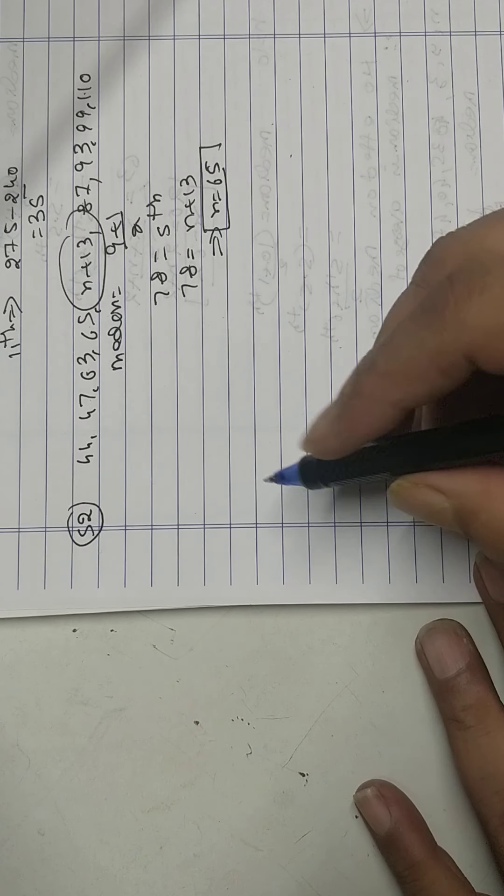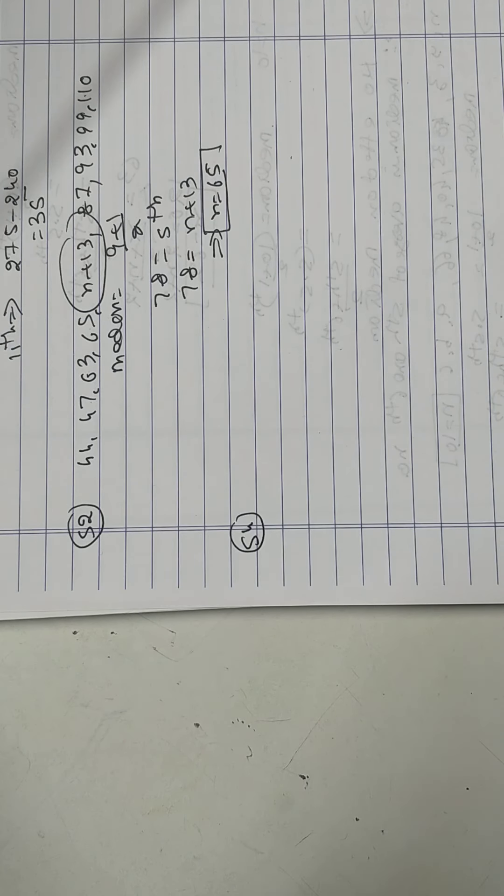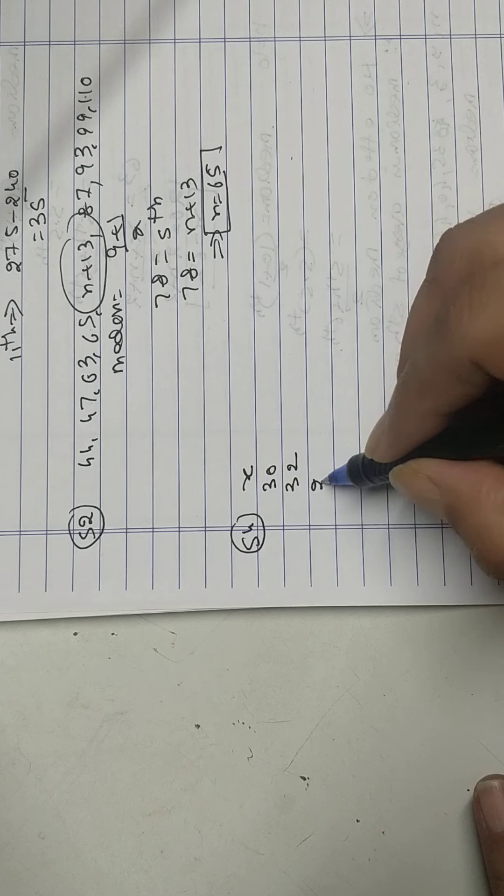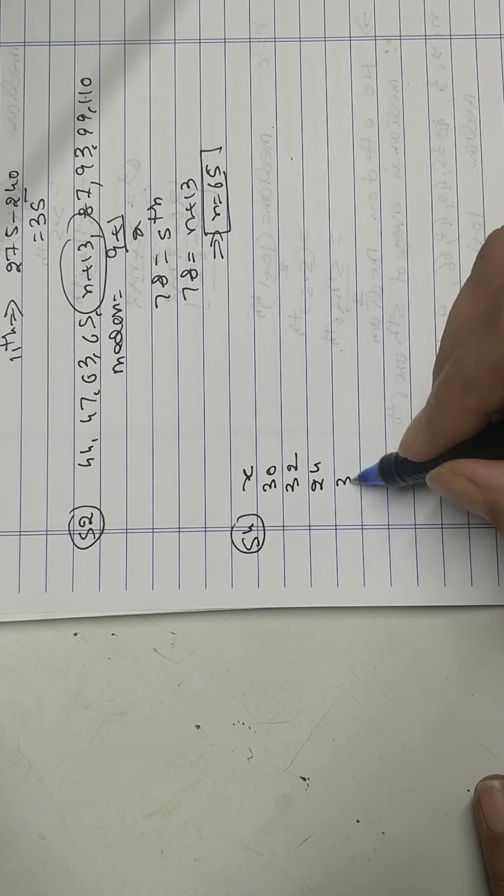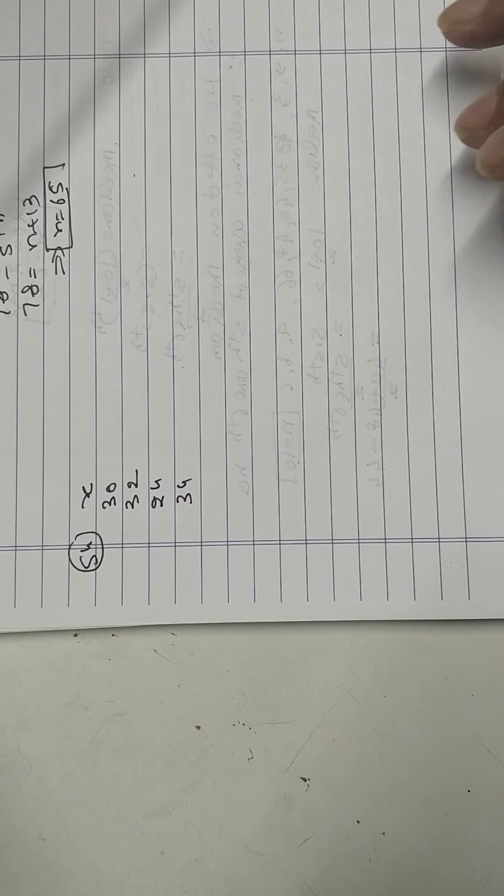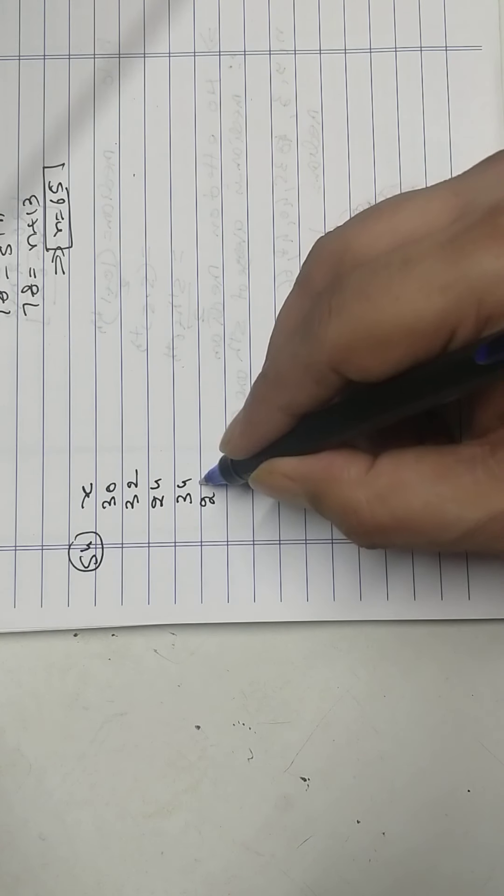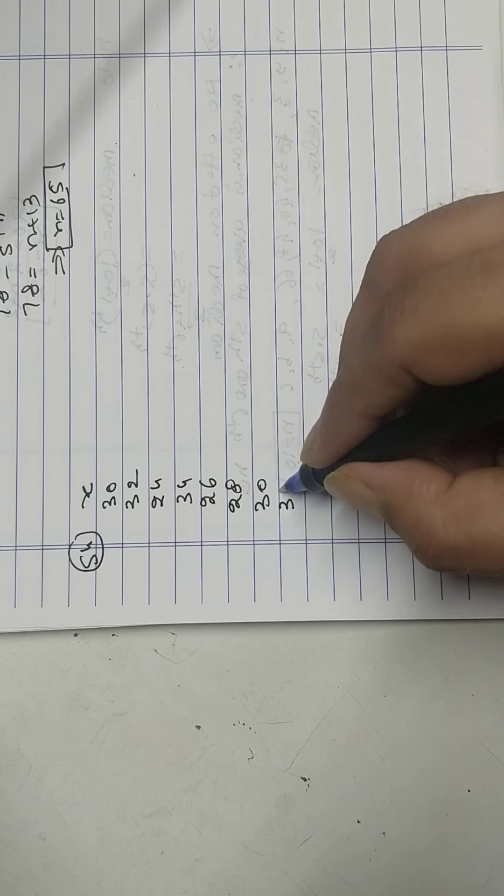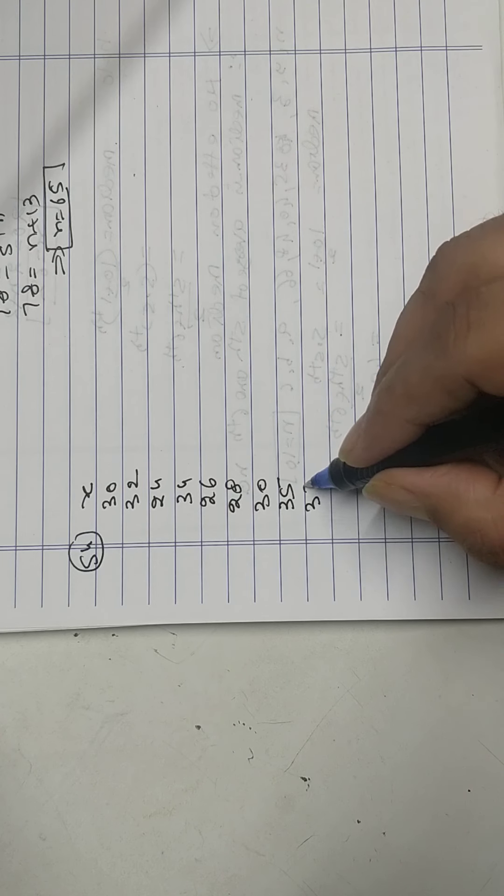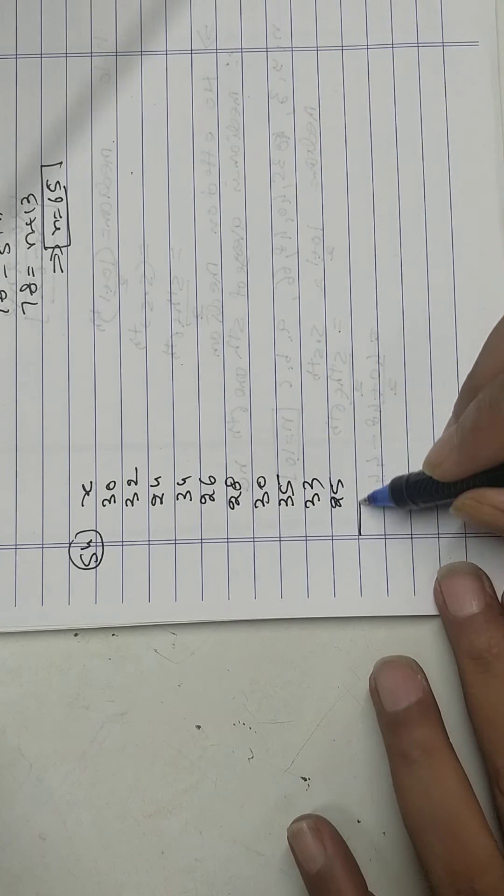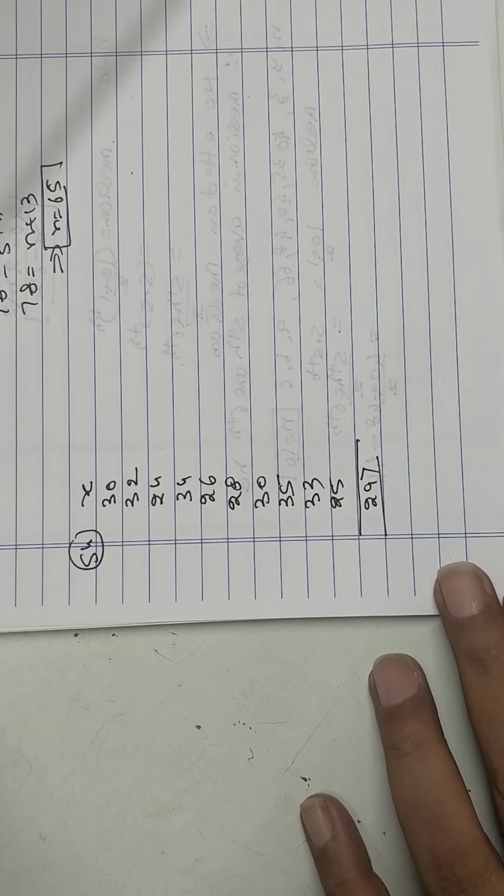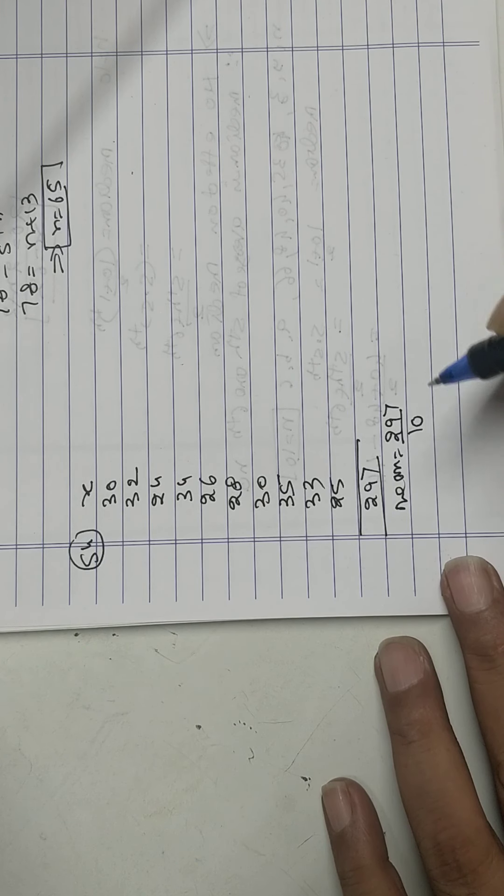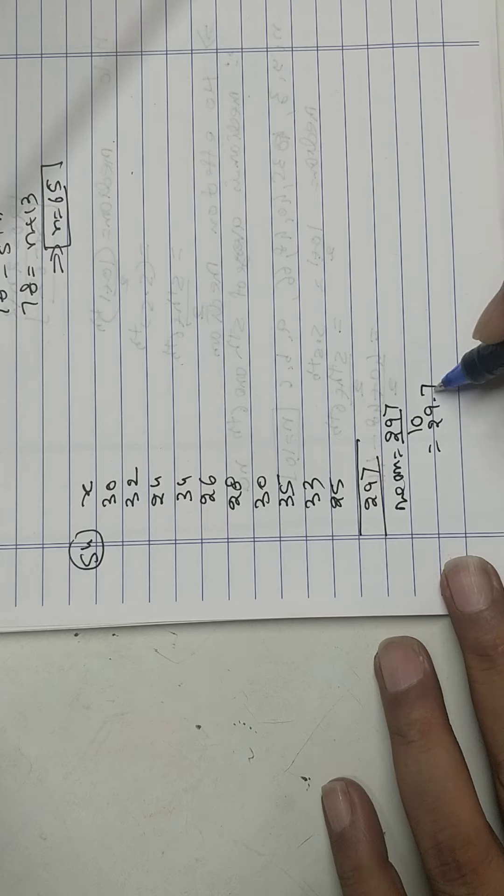Problem 54: x values are 30, 32, 24, 34, 26, 28, 30, 35, 33, 25. Add this: 297. So mean equals summation upon number. I got 29.